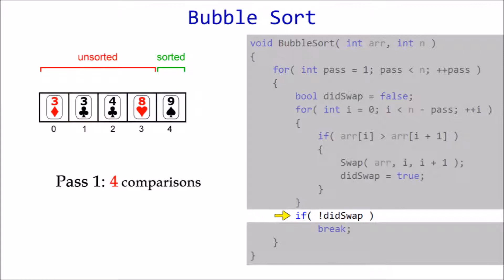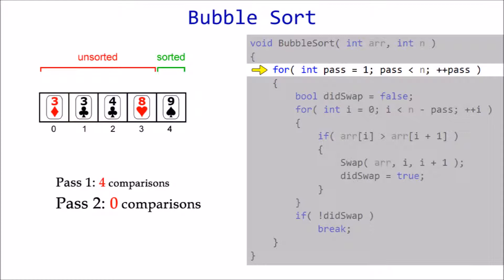Notice that the list actually is sorted, but our program has no way of knowing this. We enter the second pass, set the swap flag to false, and start scanning the unsorted section.